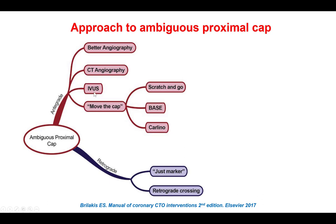If there is a side branch next to the proximal cap, one can advance an intravascular ultrasound catheter into that side branch to help guide crossing into the vessel. The fourth antegrade option is the so-called move-the-cap technique, which involves getting into the subintimal space proximal to the occlusion, then using a knuckle guidewire to cross the occlusion, followed by distal re-entry. The fifth option is the retrograde approach, which can help overcome proximal cap ambiguity but may carry slightly higher risk for complications, and is usually reserved for later in the algorithm.